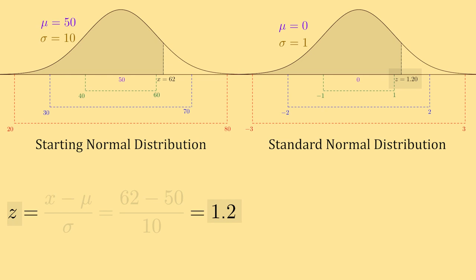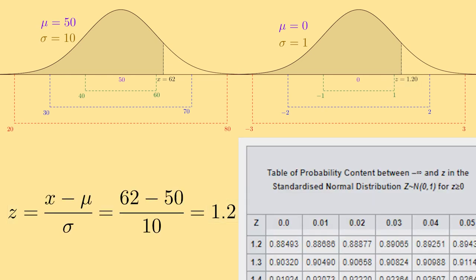To find this area, we use a z-table. And the value we get within the z-table, we can then relate back to the initial normal distribution we started with.